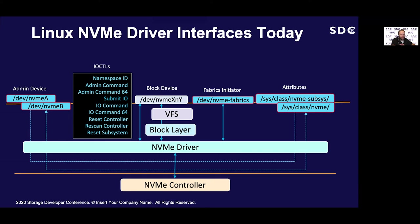We had to provide new versions of both admin and IO IOCTLs capable of returning that expanded data — the 64-bit versions. One example of an IO command requiring the 64-bit version is the ZNS append command: the user requests to append data to a zone and the drive replies with the LBA it was written to. The 32-bit version just wouldn't be able to report the LBA for some of the larger capacity ZNS drives.